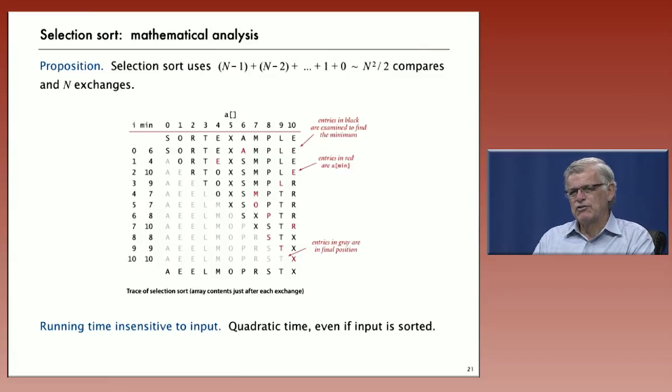What's interesting about this proposition about selection sort is that it doesn't matter what order the input is, selection sort is going to use quadratic time. Because it always has to go through the whole thing to look for the minimum. Another property is that you can't sort moving less data because selection sort does just a linear number of exchanges. Every item is put into its final position with just one exchange.